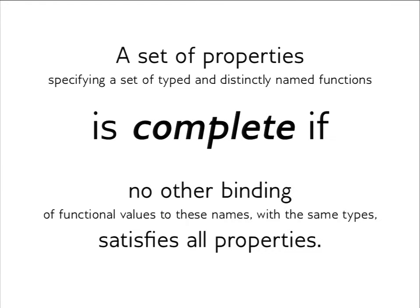Let's go into some definitions and examples of minimality and completeness. A set of properties specifying a set of types and distinctly named functions is complete if no other binding of functional values to these names with the same types satisfies all properties. Perhaps that wasn't clear enough, so let's see an example.